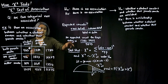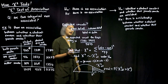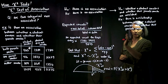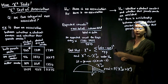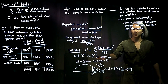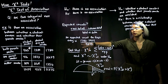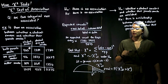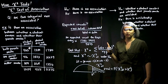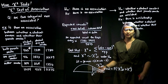We have our test stat — now we need to know the sampling distribution for that test stat under the null hypothesis. Just like in our previous video, we're going to have a chi-squared distribution, and we're going to base the degrees of freedom off of the number of categories. In our previous video with one categorical variable, we took the number of categories minus one.